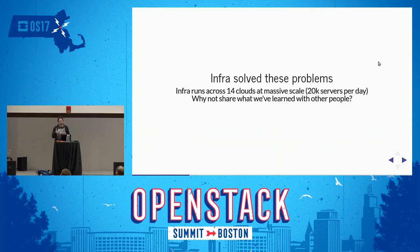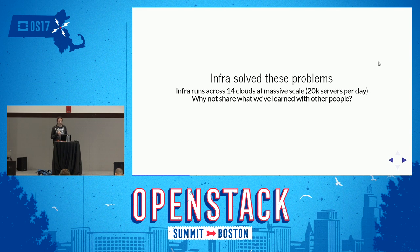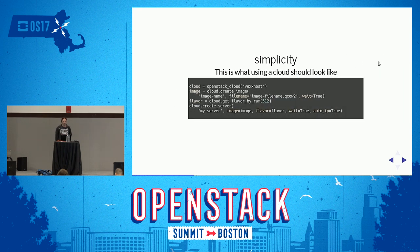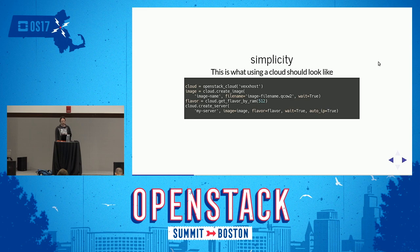In our world in Infra, we run across a lot of clouds at pretty massive scale. We spin up and tear down around 20,000 servers a day in service of the OpenStack development effort, and that takes a lot of effort. We learned some things about using the OpenStack APIs and thought that sharing that with the rest of the world — and not just keeping it to ourselves in our node pool project — would be a nice thing. Also, when I started tacking on the OpenStack support for Ansible, I realized I was just re-implementing all the logic from node pool. Other people should be able to use that.